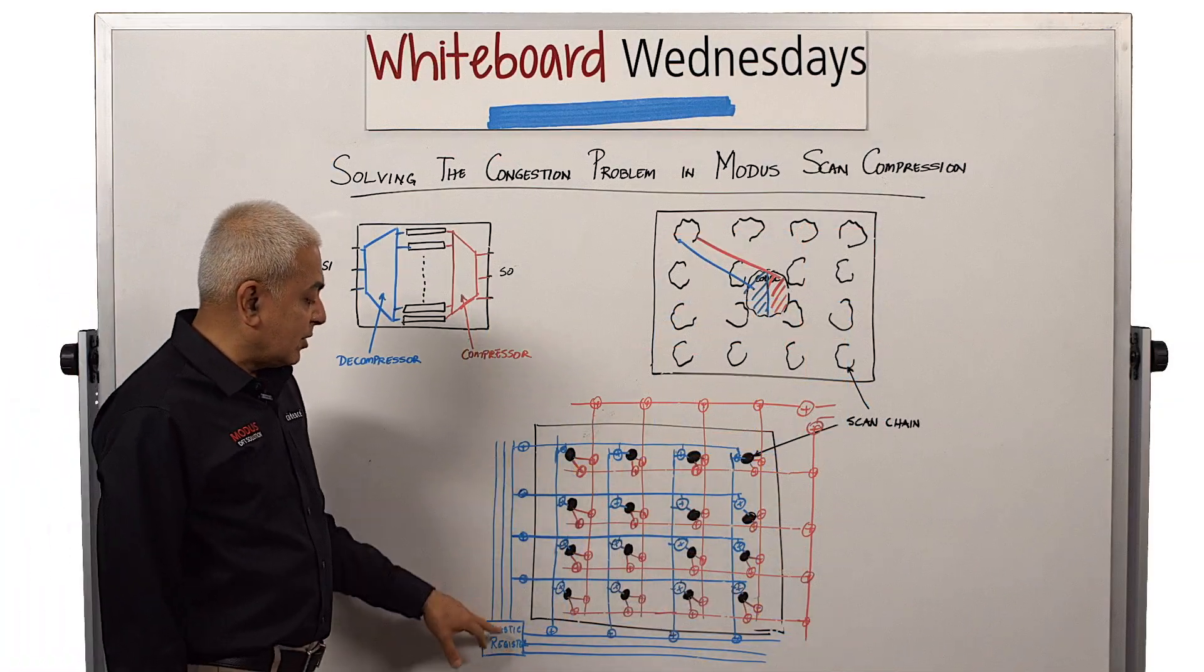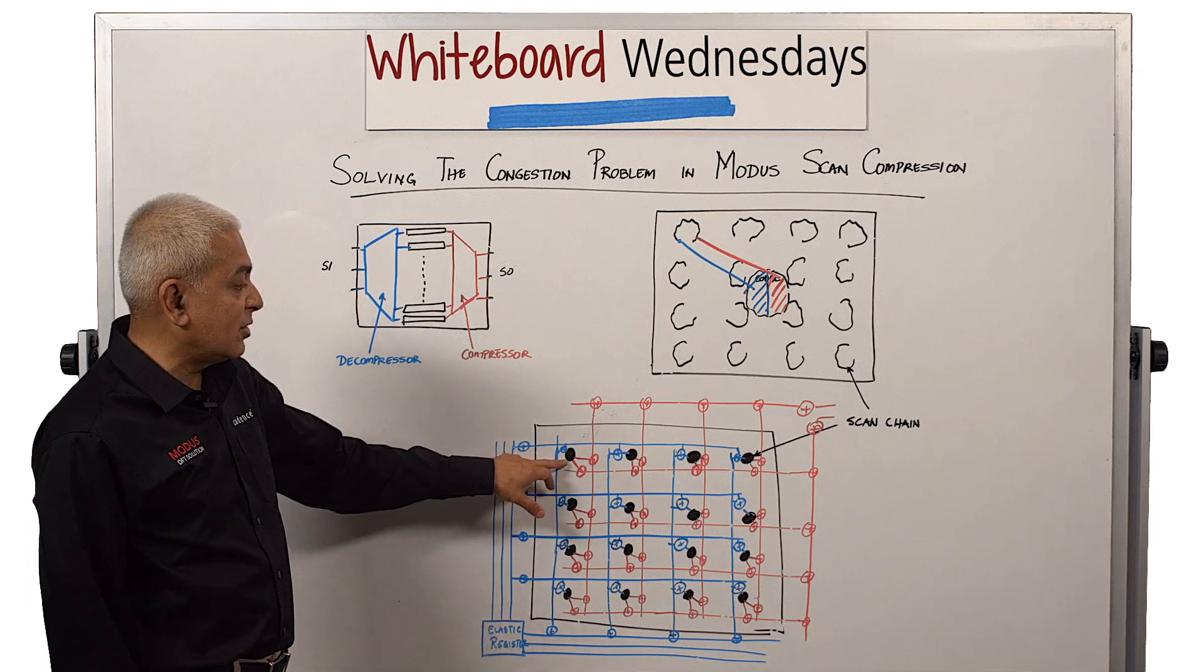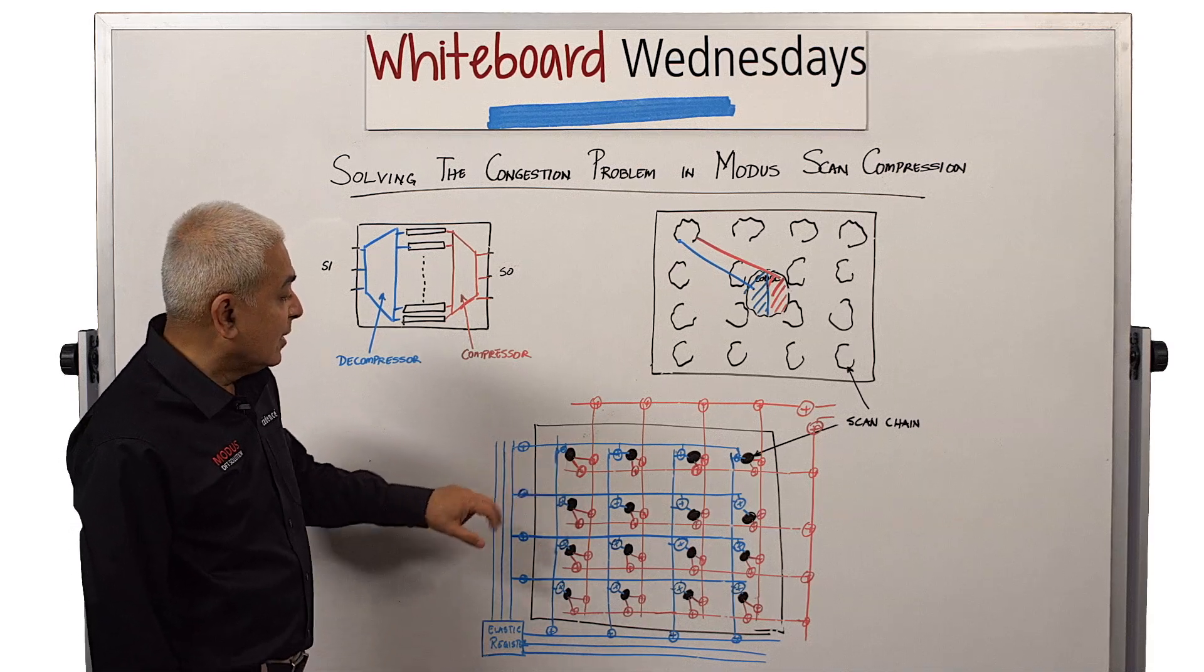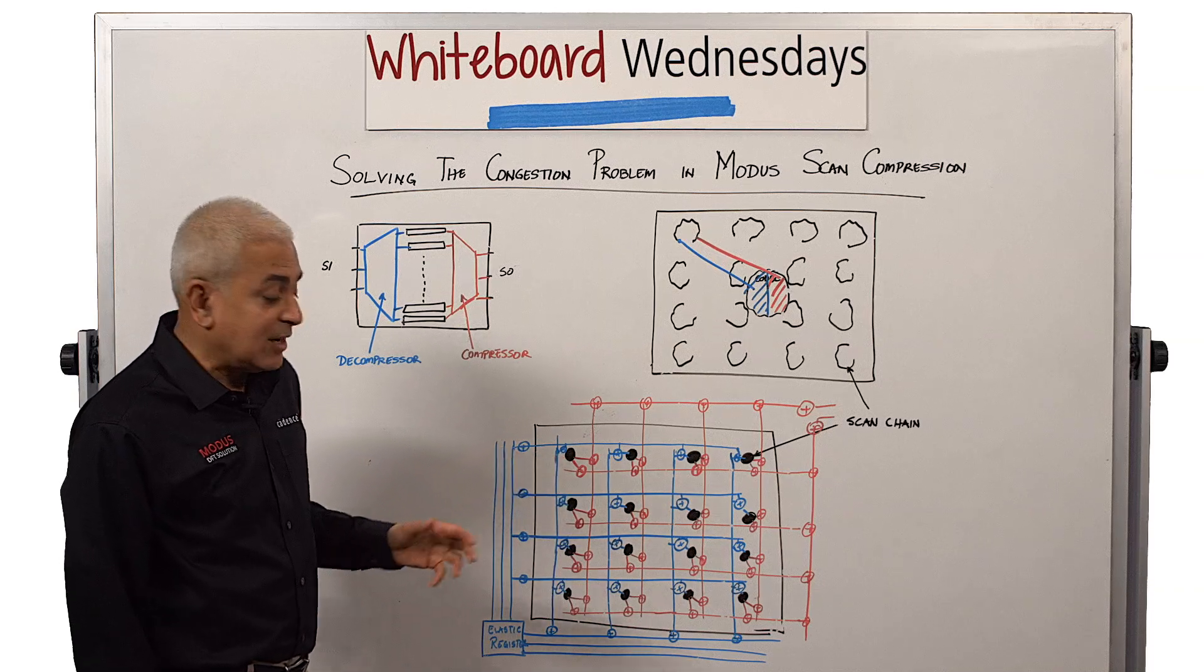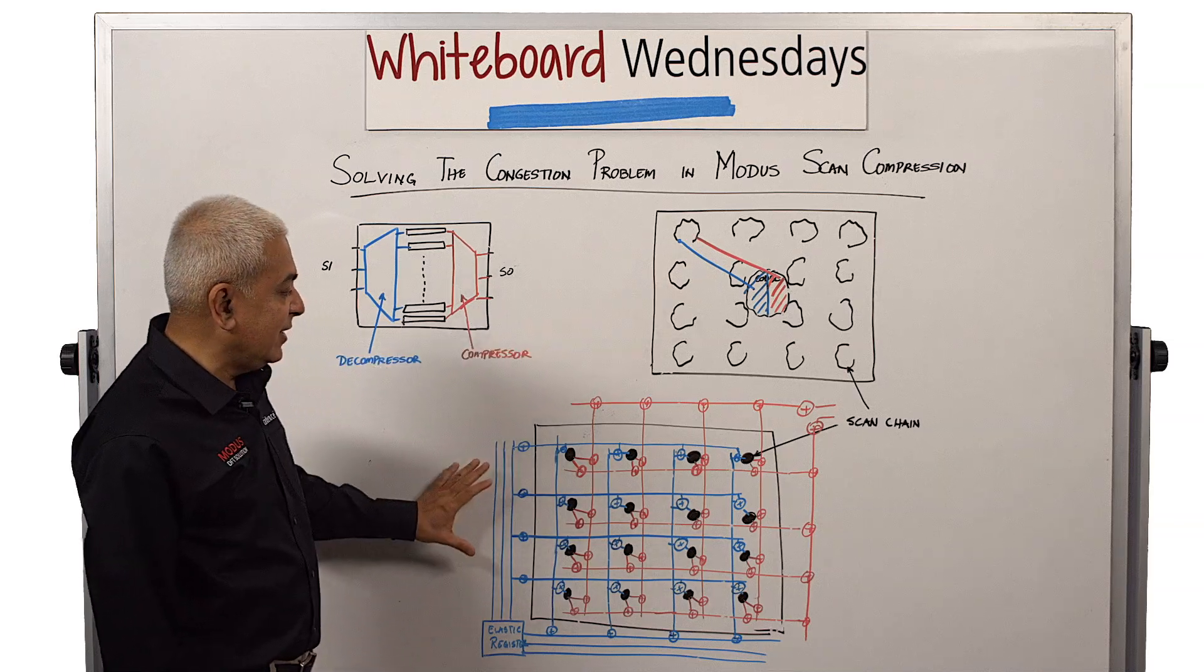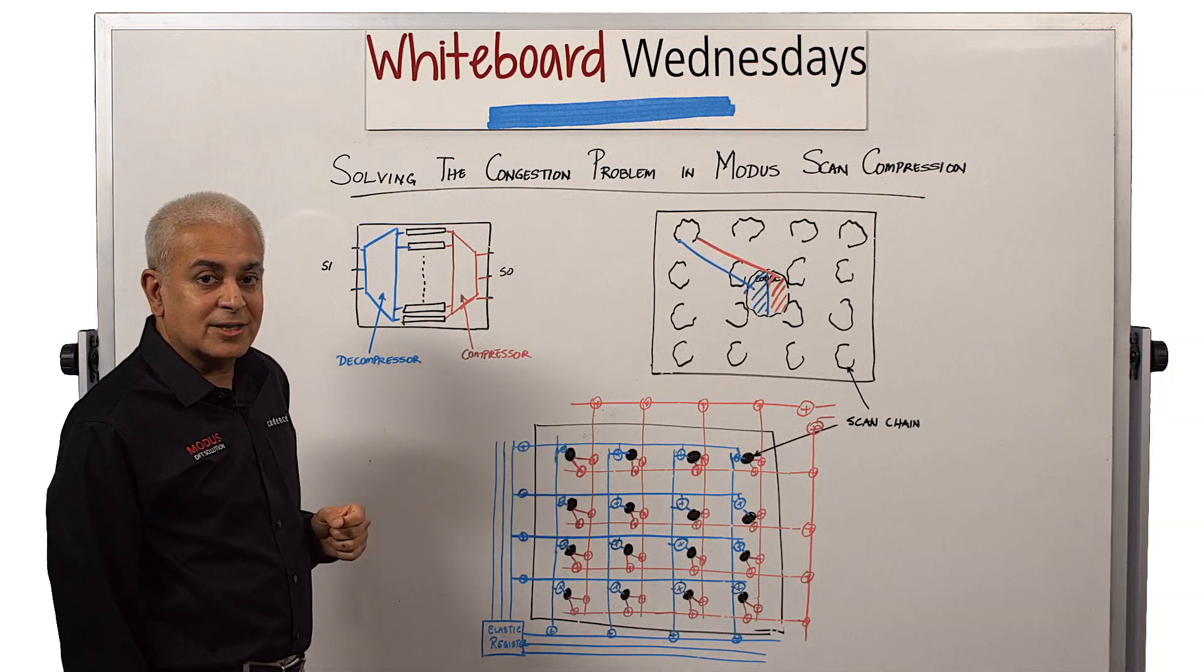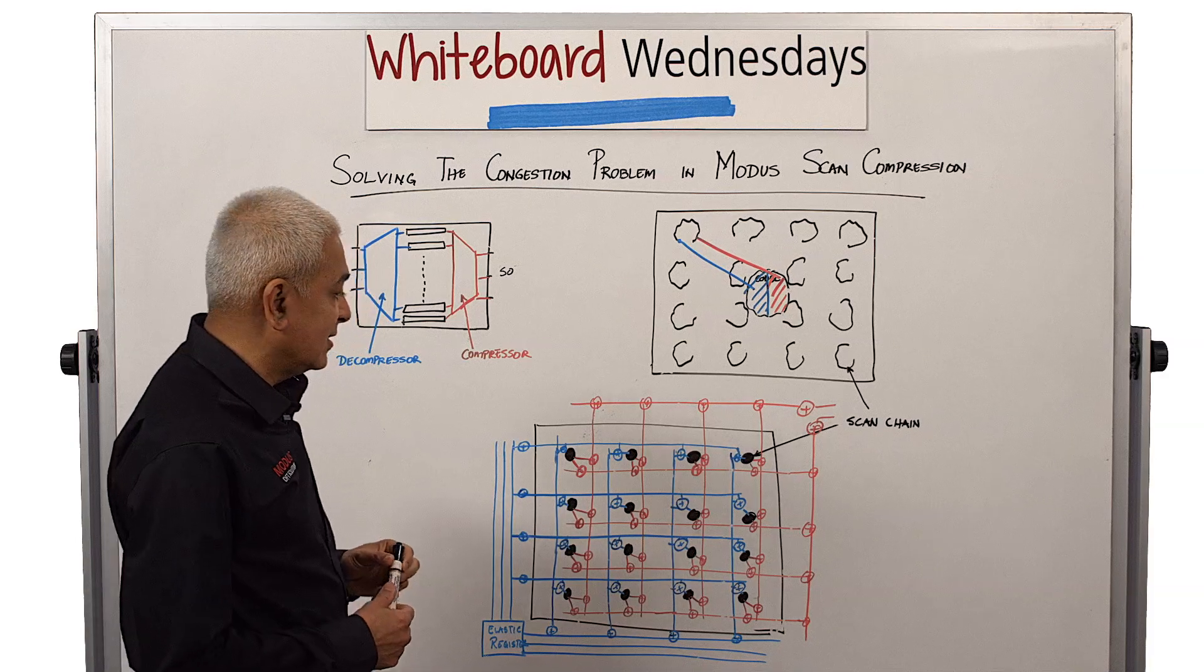The XORs of the decompressor are constructed based on the locations of the scan chains represented by the black circles in this picture. As a result of this, the congestion is minimized. The wire lengths are much smaller than what you would get in the original case. So it is very layout friendly, and the strength of the solution is that the XORs are constructed not randomly but based upon the locations of the scan chains in the design.